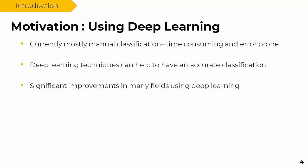The motivation for using deep learning is that most manual classification and image processing methods used for classification are time consuming and have a high chance of error, meaning we cannot achieve high accuracy. Deep learning techniques can help achieve accurate classification. We have witnessed significant improvements in computer vision fields such as text classification, voice classification, image classification, medical image classification, and even security — all improved by employing deep learning.